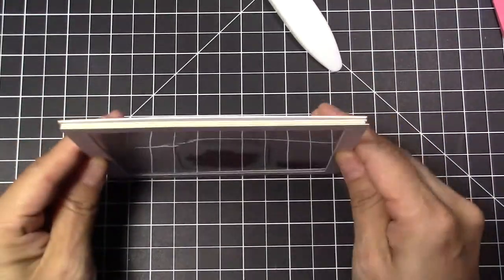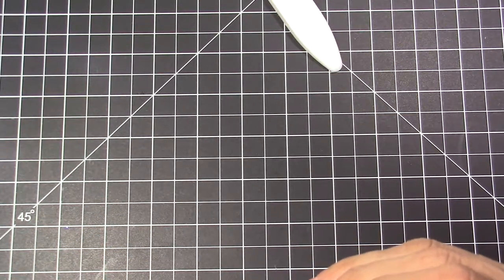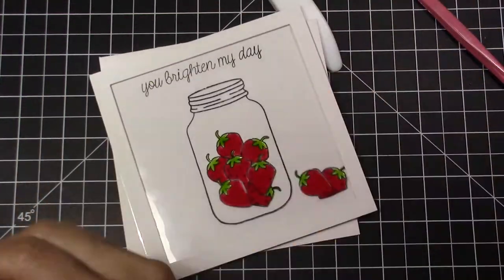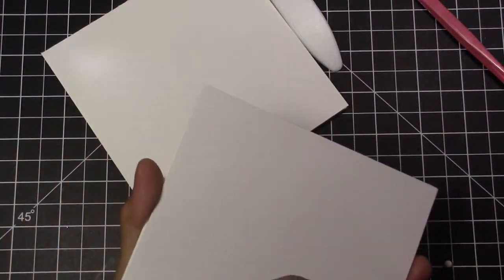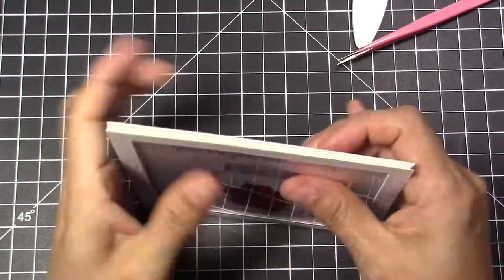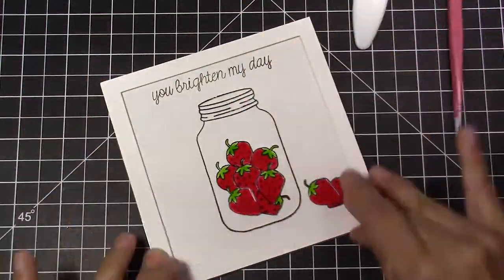After I glue the frame, I'm going to glue my card pattern to my card base. And after that, I'm going to decorate with some red jewels around the card. And that will be it.